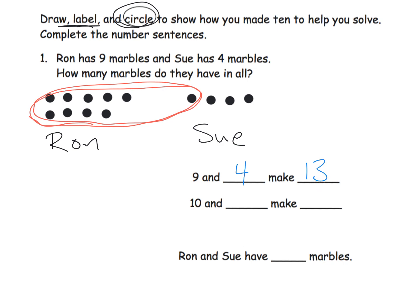Or they may have held off on answering the 13 because this number sentence says we made 10, and then what's left over is 3. So that would be 10 and 3 make 13. Then students might have gone back and filled in the 13 here. So Ron and Sue have 13 marbles.